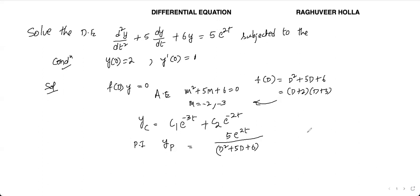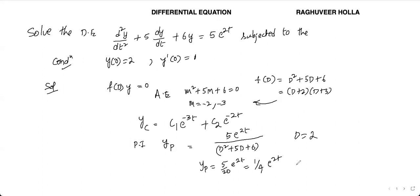To solve the particular integral, we substitute D = 2. This gives yp = 5/20 · e^(2t), which simplifies to (1/4)e^(2t). So the general solution is y = yc + yp.